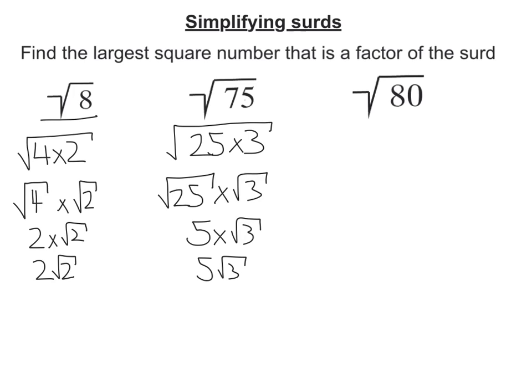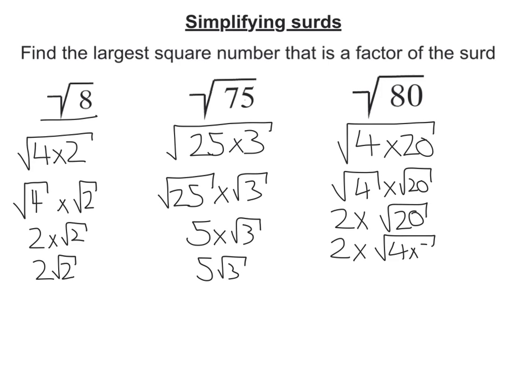Now root 80. Well the biggest square number that goes into 80 is 16. But let's presume we didn't see that one and we just thought that 4 was the biggest one. So let's assume 4 goes into it. So 4 times 20. Let's split that then into 2. We've got root 4 times root 20. So we have 2 times root 20. Now I can look at that 20 and think, is there a square number that goes into 20? Well there is. There's 4 again. So we're going to get 2 times root 4 times 5, or 2 times root 4 times root 5. Which is 2 times 2 times root 5. Which is 4 root 5.